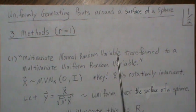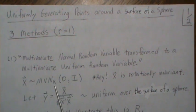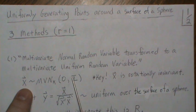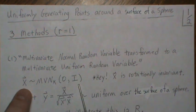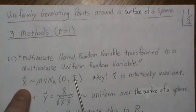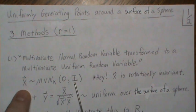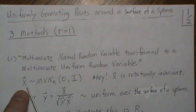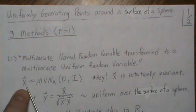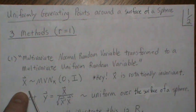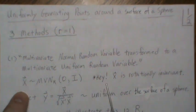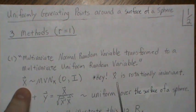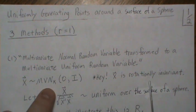Method one uses a normal random variable. We generate a multivariate normal random variable where each component is independent and each variance is one — it doesn't matter what the variance is as long as you keep the variances the same, so it's easy to set it to one. For a three-dimensional multivariate normal, you just randomly generate a normal zero-one random variable for each component and put it in a vector. The key point is that X is rotationally invariant.